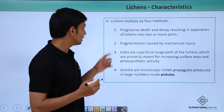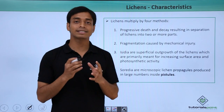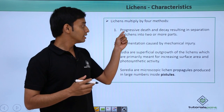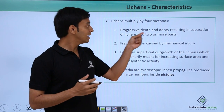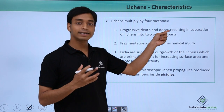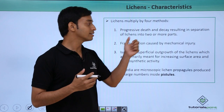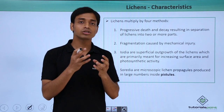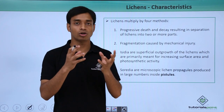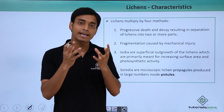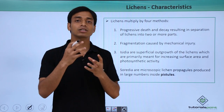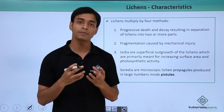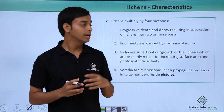Now let us see how lichens can increase in number or multiply. Progressive death and decay can result in the separation of lichens into two or more parts. Because of certain factors it can separate, and those parts can slowly increase in size and number, and hence the lichen can multiply.